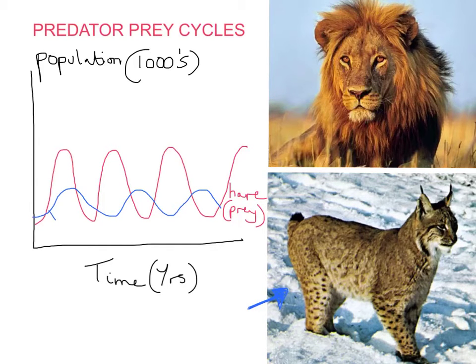So this blue line represents the lynx, or what we're calling a predator in this example.